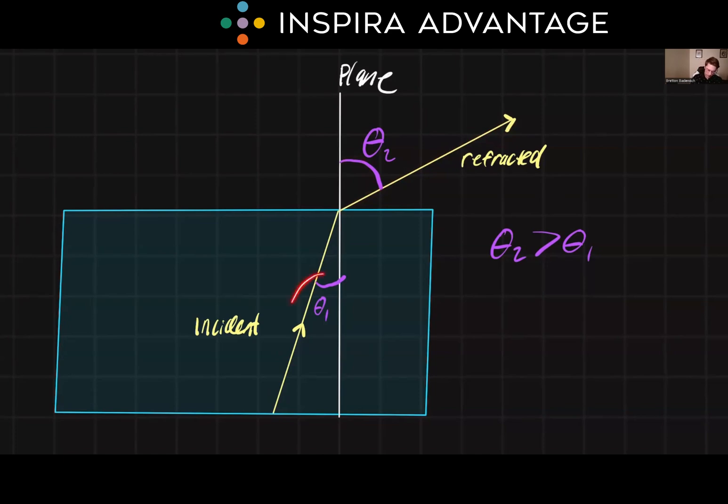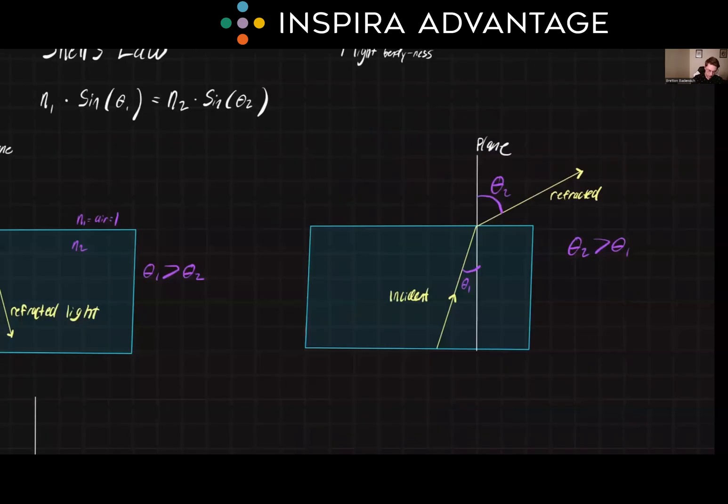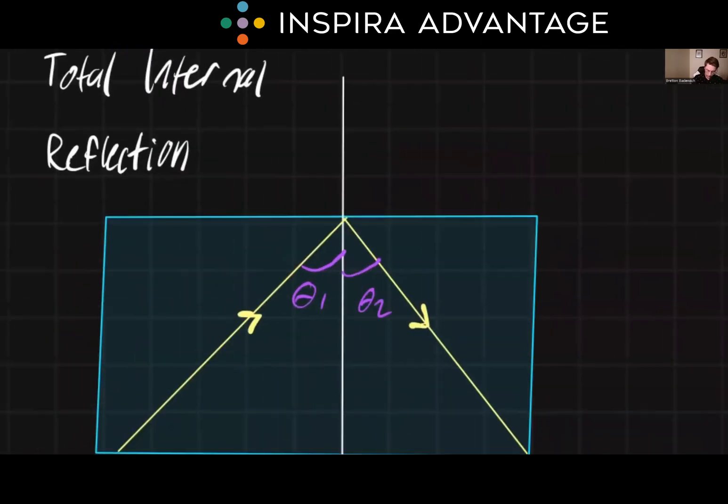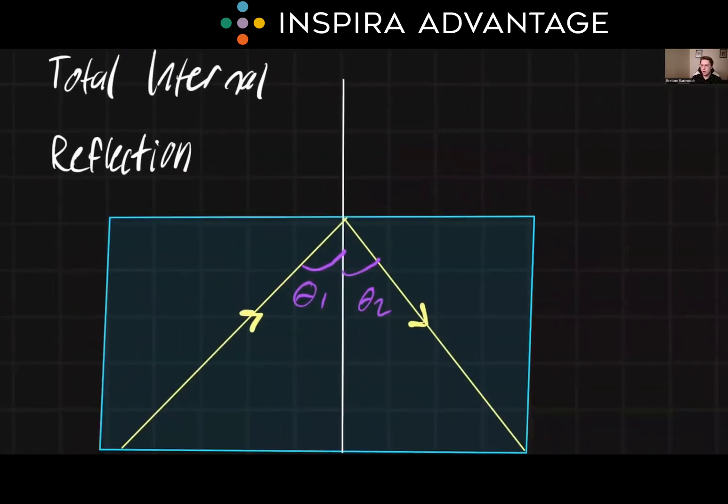But depending on this incident angle, something weird can happen. This is called total internal reflection. This is when all of the light stays within the same medium. All of it is reflected or refracted. You have 100% refraction, which equals reflection.